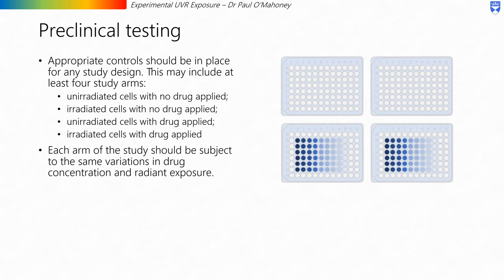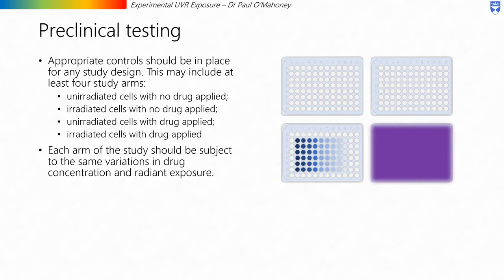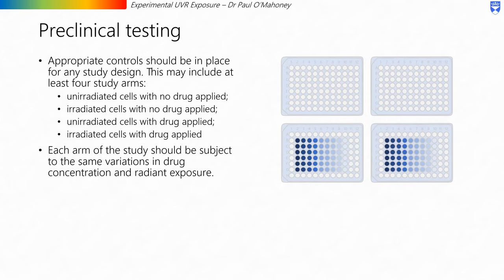Appropriate controls should be in place for any study design, including at least four study arms: unirradiated cells with no drug applied; irradiated cells with no drug applied; unirradiated cells with drug applied; and irradiated cells with drug applied. Each arm of the study should be subject to the same variations in drug concentration and radiant exposure.